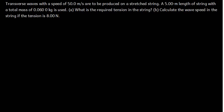In this video, we are going to talk about waves and solve some practice questions. The first question states: a transverse wave with a speed of 50.0 meters per second is to be produced on a stretched string. A 5.00 meter length of string with a total mass of 0.06 kg is used. Part A: what is the required tension in the string?